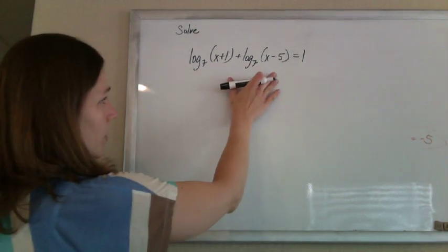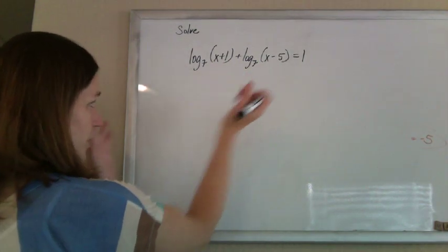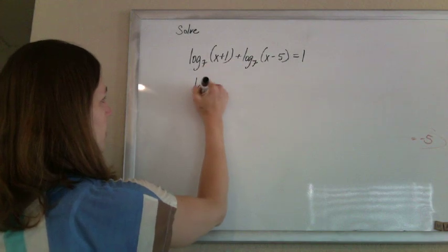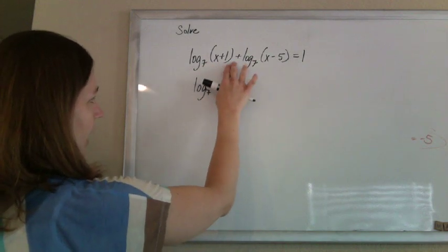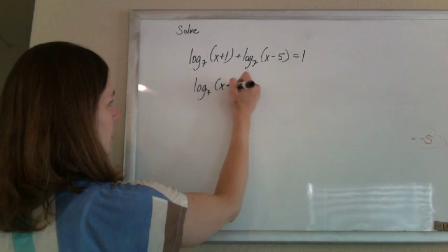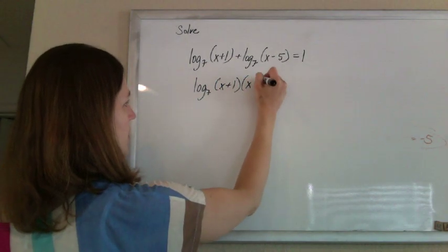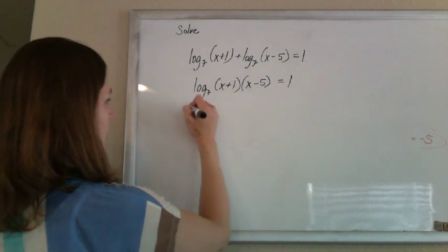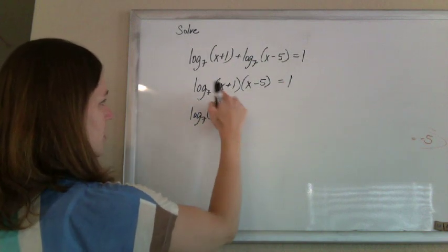Alright, so if you have two logs on the same side, you want to squish them together to write a single log first. And our property is that if we're adding logs as a single log, they'll be multiplied. This is the log base 7 of x plus 1 times x minus 5 will equal 1. This is the log base 7, I'll just distribute this,